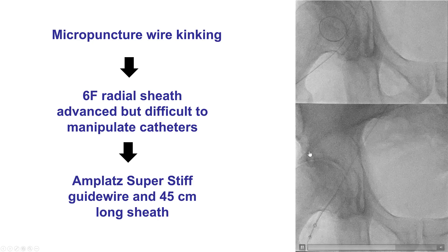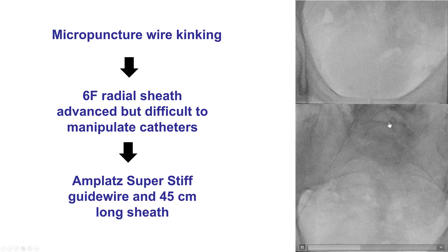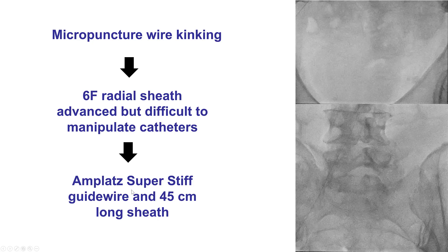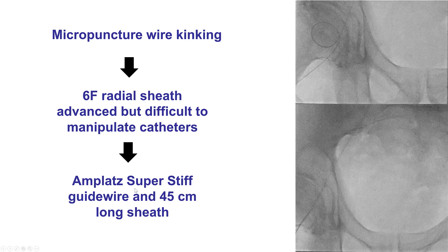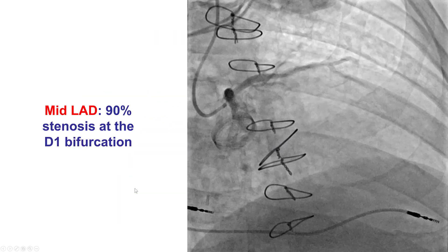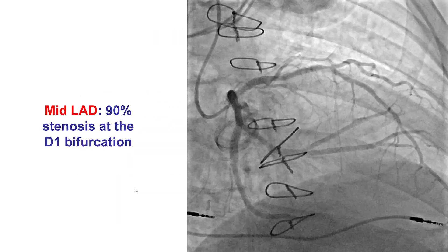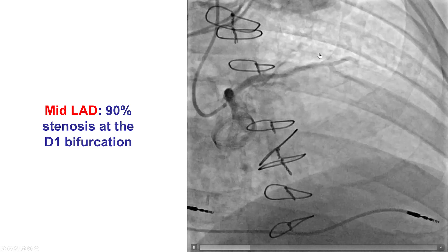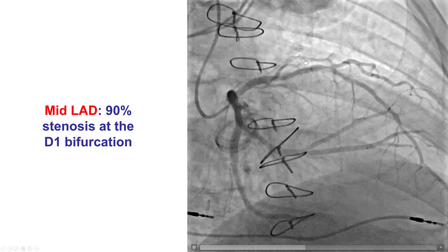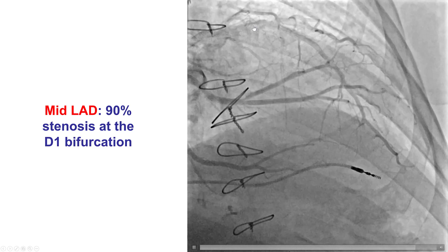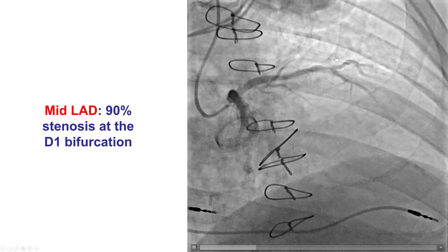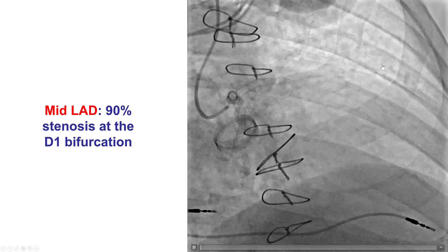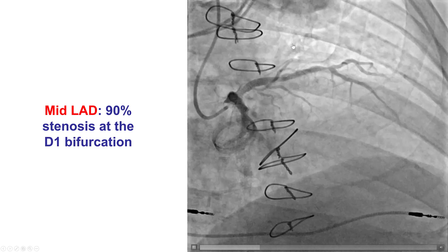after which a 6-French radial sheath was inserted, and then this was changed for a longer sheath using a stiff Amplatz super-stiff guide wire. Diagnostic angiography showed a significant lesion in the mid-LAD at the distal edge of a previous stent and at the bifurcation of a fairly sizable diagonal branch.